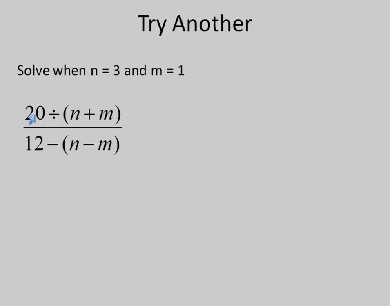Alright. Here's a more complicated one. 20 divided by n plus m. 12 minus n minus m. So we're going to substitute in for our first step. That's all we're going to do. n equals 3. m equals 1. So we substitute in there. We're going to do the same thing where we substitute n is equal to 3, m is equal to 1. So now I have 20 divided by 3 plus 1, which is 4. And 12 minus 3 minus 1, which is 2.